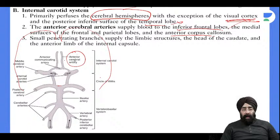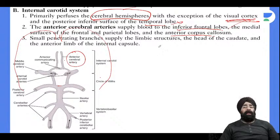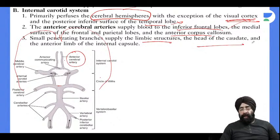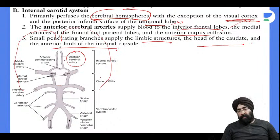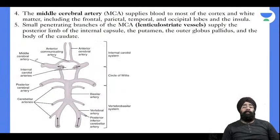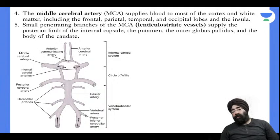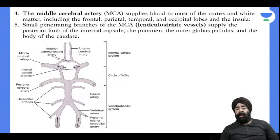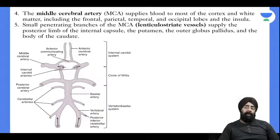The small perforating branches supply the limbic structures, head of the caudate, and the anterior limb of the internal capsule. This is visible in the Circle of Willis diagram.